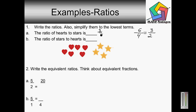Now for B, we have the ratio of stars to hearts. Our stars — we have four stars — so we put that as our numerator. And hearts, we have six hearts. Now we can reduce this: two goes into four two times, so our numerator is two. Two goes into six three times. So the final answer for B is two over three.